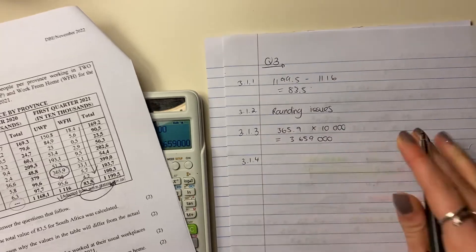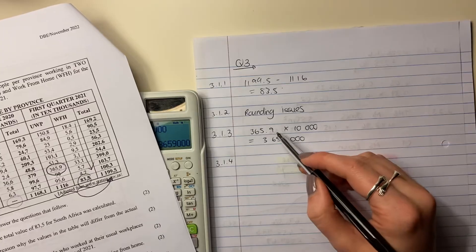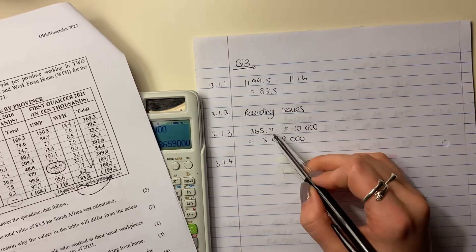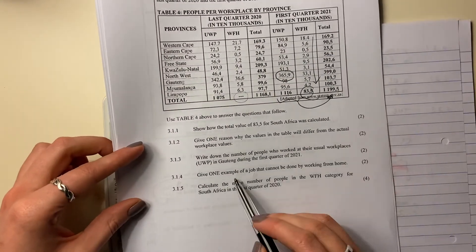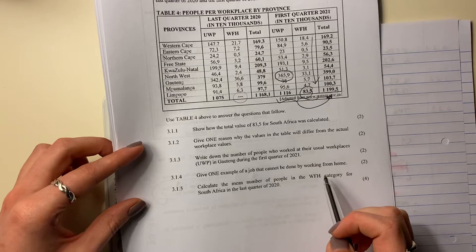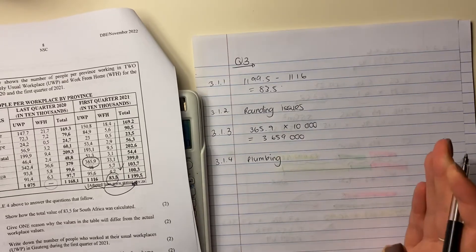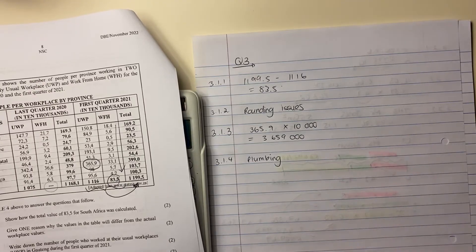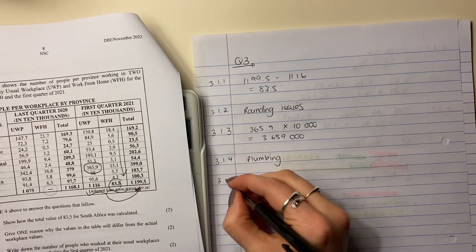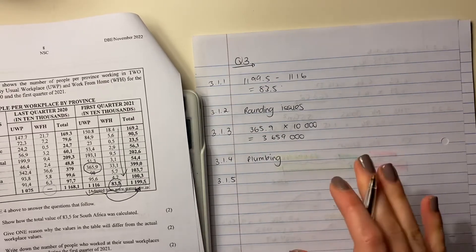You could actually write your 365.9 times 10,000 if you wanted to do that, but you have to indicate that this is not the amount. You can't have 0.9 of a person, so you need to just be careful regarding that. It says, give one example of a job that cannot be done by working from home. Well, plumbing. You could have any form of cleaning, you could have doctor's work, you could have security work. There's lots of things you could write. The one that jumped into my head was plumbing. So that's one that you can't do from home. Some jobs you can do from home, like when you're working on a laptop, but some you can't.